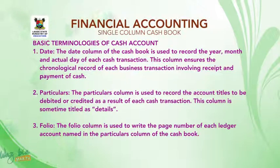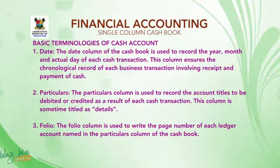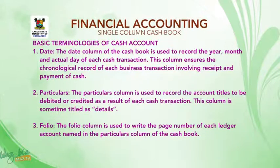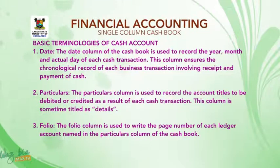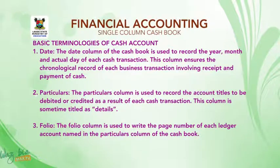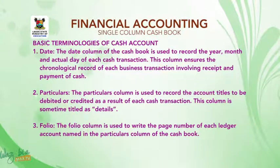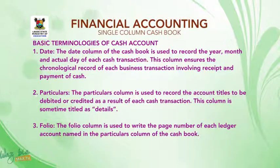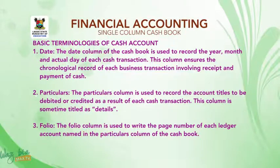Basic terminologies of cash accounts. Number one: Date — the date column of cashbook is used to record the year, month, and actual day of each cash transaction. This column ensures the chronological record of each business transaction involving receipt and payment of cash. Number two: Particulars — the particulars column is used to record the account titles to be debited or credited as a result of each cash transaction. This column is sometimes titled as details.